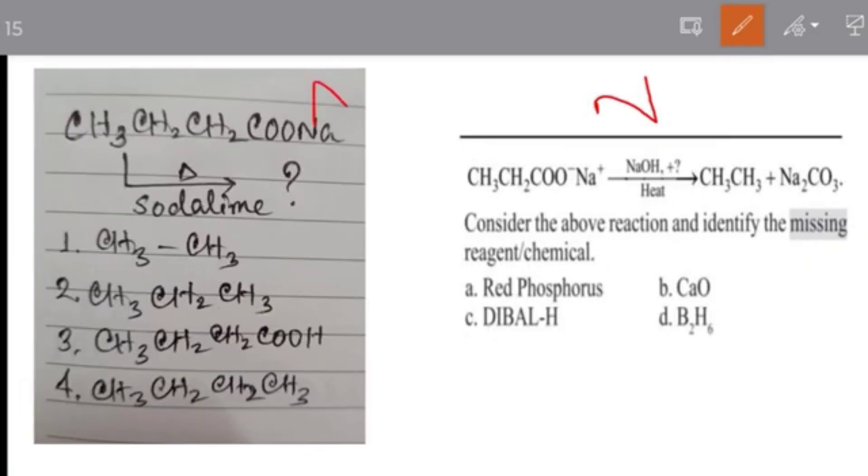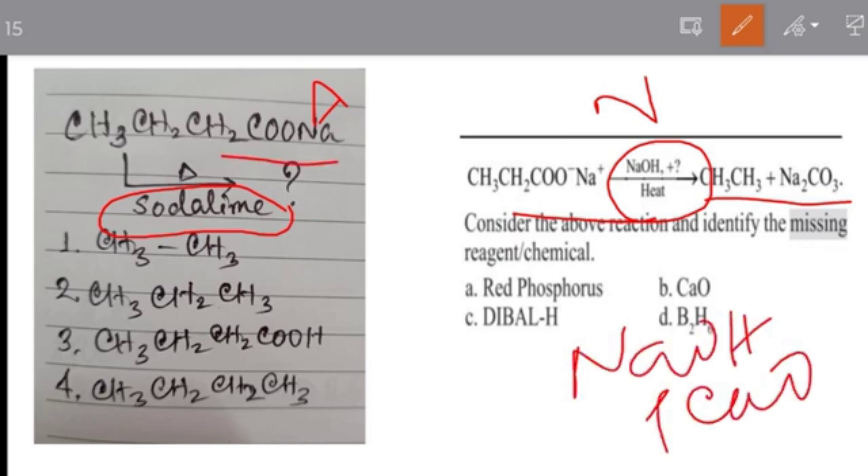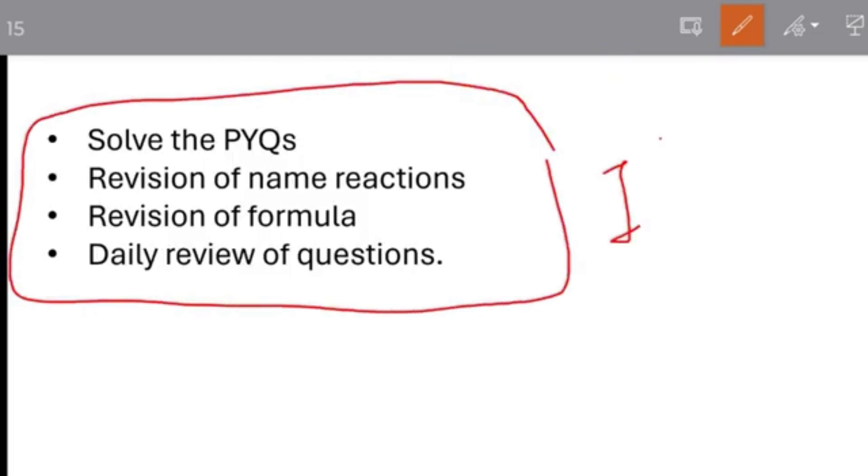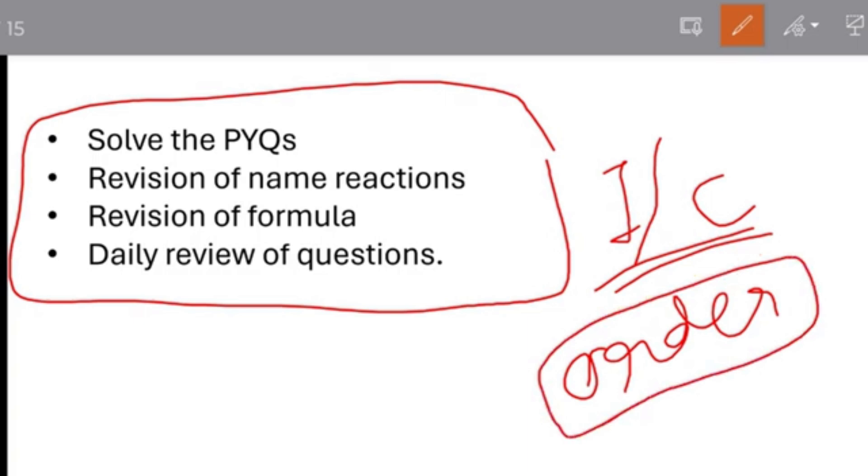This question - see, this is the NEET question, this is AIIMS Nursing question. See the similarity. Here NaOH plus what leads to this product. And here it is said that sodalime and heat. So sodalime means NaOH plus CaO, you know. So this is a decarboxylation reaction. And the answer will be propane, propane, alkane forming reaction. And here it will be CaO. So if you solve this NEET question, then you can easily answer this question in BSc Nursing. What is the difficulty? There is no difficulty. But it will be easier for you if you have solved the NEET questions. And all these order type of questions - there are some exceptions. Then you will forget in the exam hall, and then you start regretting.